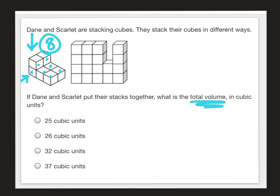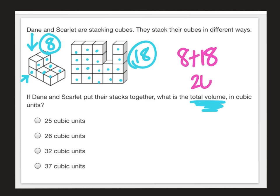This one, you can pretty much see everything. So we just have to count: one, two, three, four, five, six, seven, eight, nine, ten, eleven, twelve, thirteen, fourteen, fifteen, sixteen, seventeen, and eighteen. And remember, it said total volume. So all we have to do is add it up. Eight plus 18, and that's going to give us a total of 26 cubic units. So our answer would be B on that one.